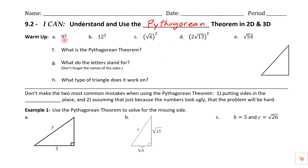So in the warm-up, we've got 9 squared, which of course means 9 times 9. We use 9 twice, so that's going to be 81. And then we've got 12 squared — hopefully these are things you've got memorized — so we get 144 here.